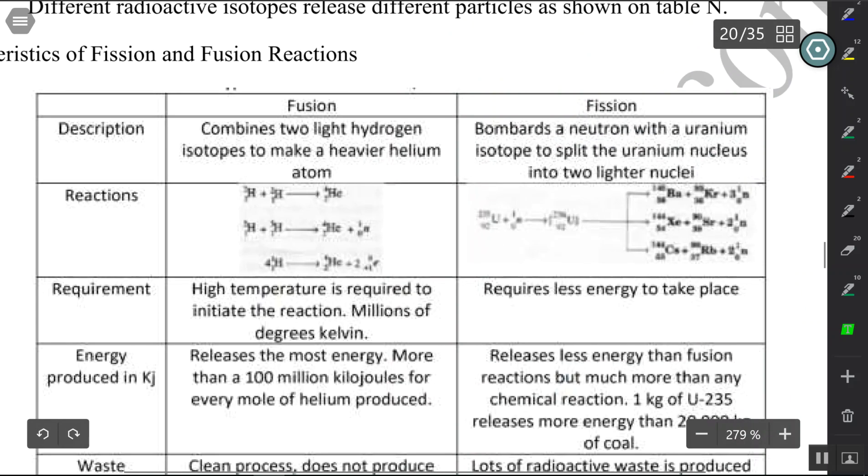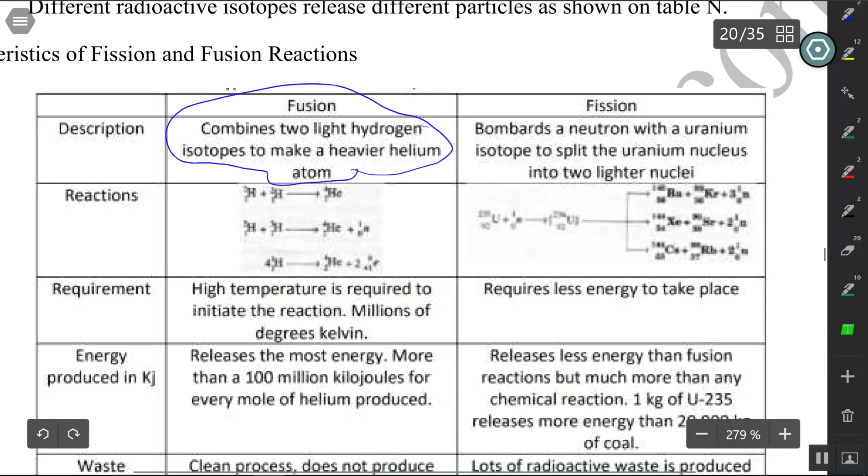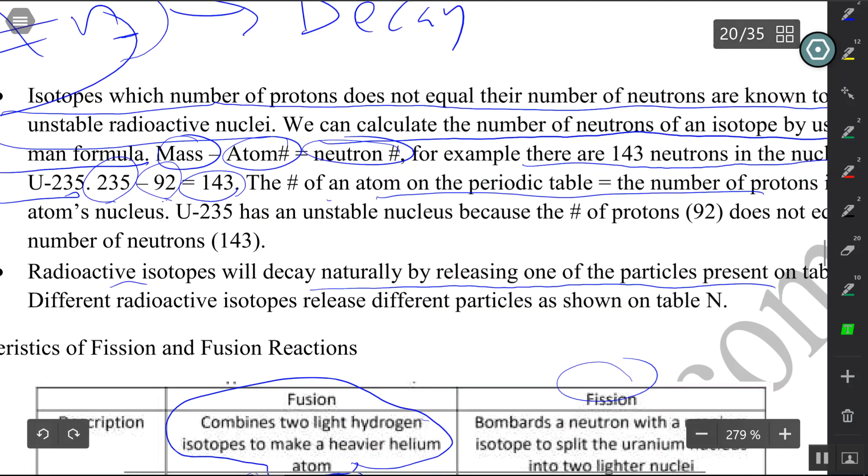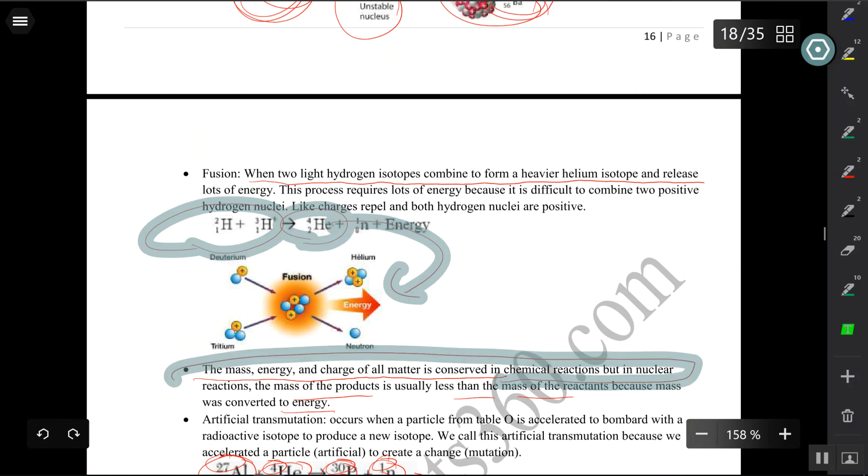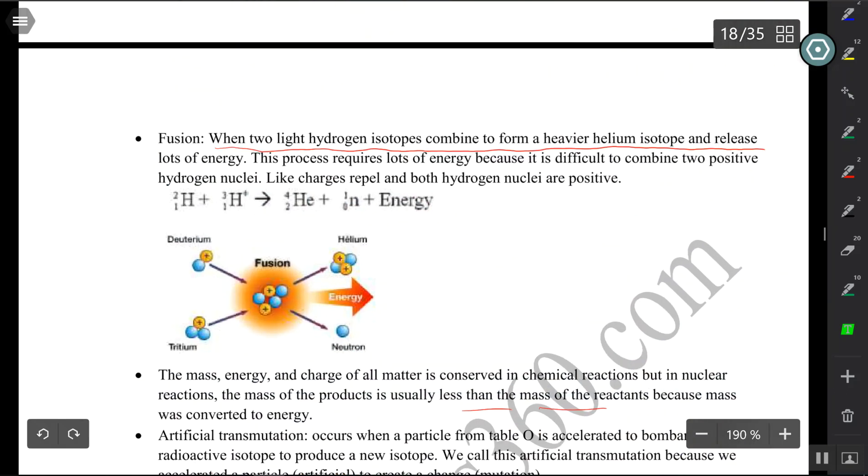Fusion requires you to combine two light hydrogen isotopes to make a heavier helium isotope. H1, H2, H3, combine them to make helium. This would be fusion: combining deuterium and tritium, which are simply just H2 and H3, in a fusion process to create helium.